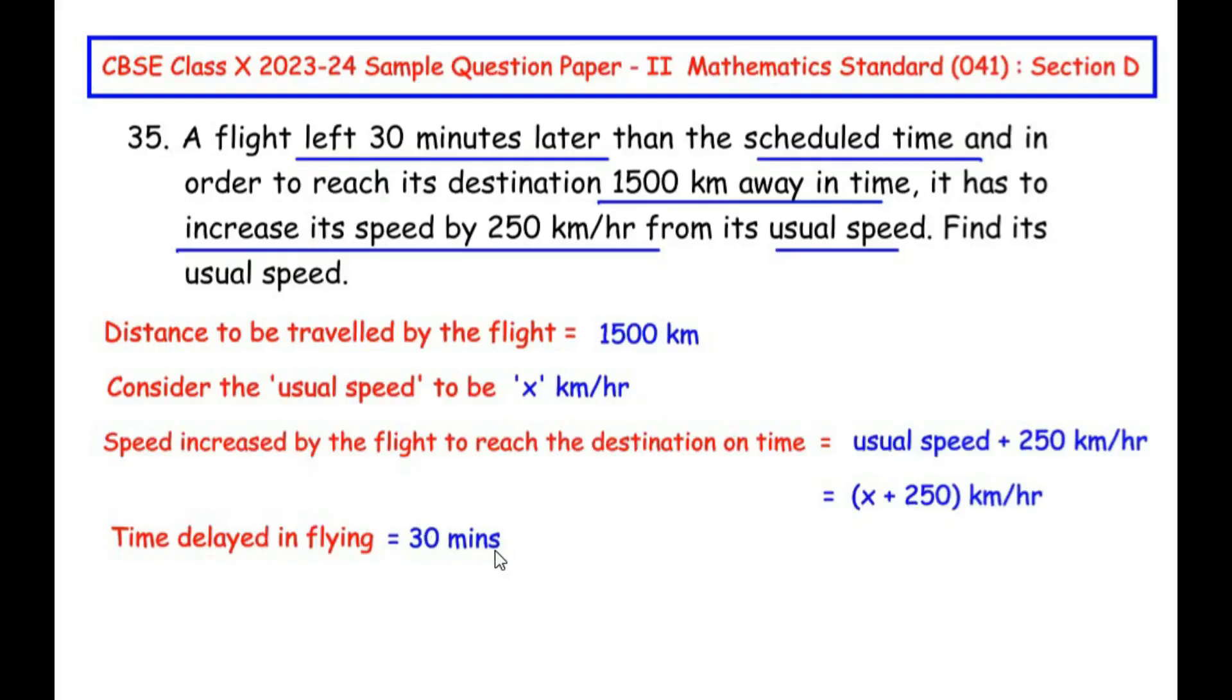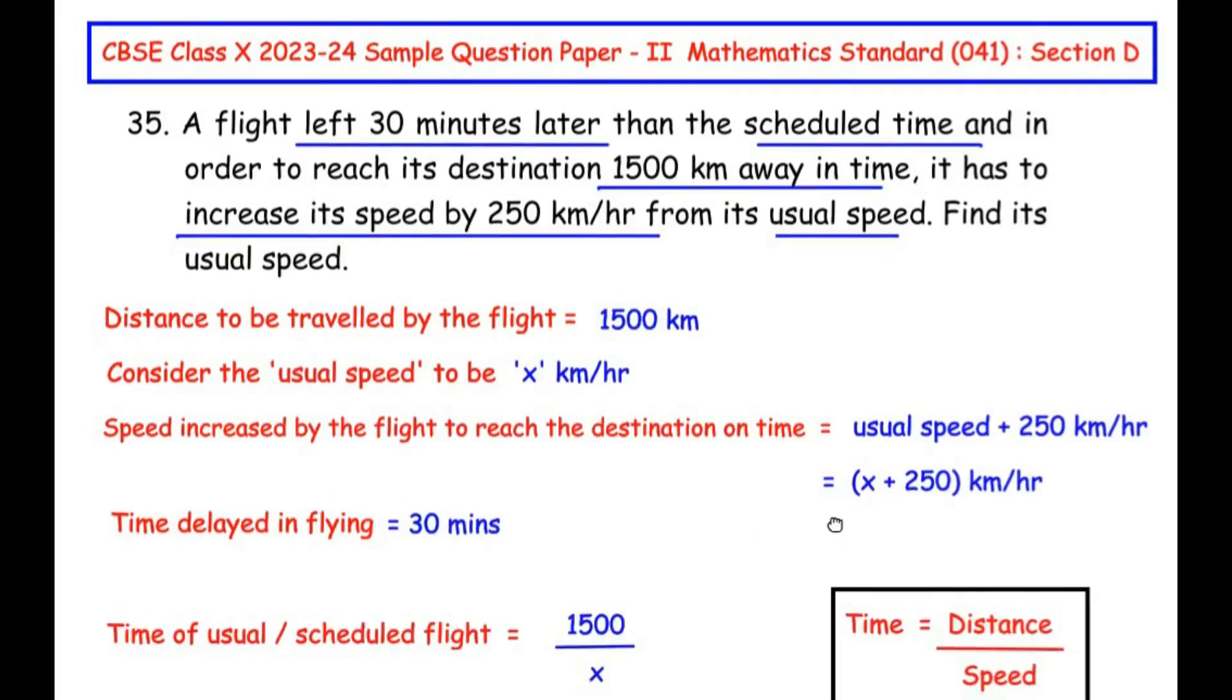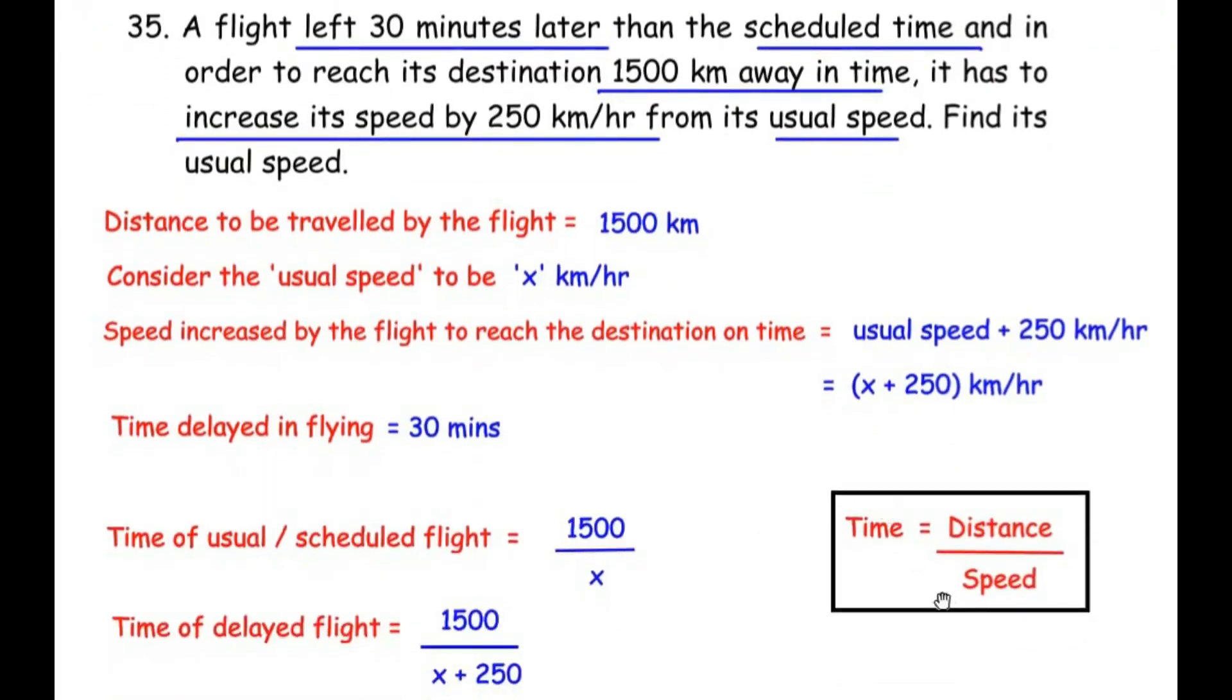Now let us try to write down the scheduled time and delayed time of the flight in terms of the distance traveled and the speed. So for this, we are going to make use of the relationship between distance, time and speed, which is time is equal to distance traveled over the speed. So for the scheduled flight or the usual flight, the time is going to be distance traveled over the speed. So distance traveled is 1500 over the regular speed or the usual speed is x.